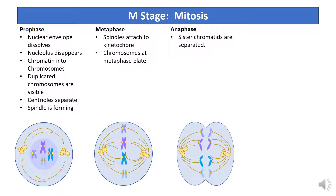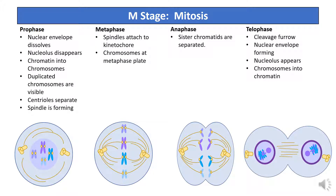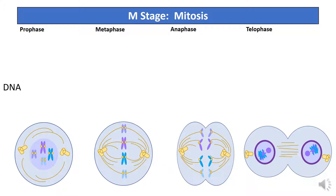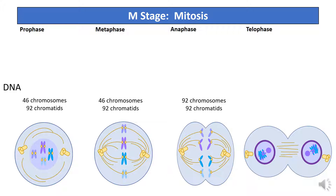Anaphase is the third step, and this is where the chromatids are pulled apart. The fourth step is called telophase, and here we have the appearance of what's called the cleavage furrow, the reformation of the nuclear membrane and the nucleolus, and the complete separation of the chromatids back into the jumbled mess of DNA strands we saw in the beginning. So what about those chromosomes? In prophase and metaphase, we have 46 chromosomes made of 92 chromatids. But in anaphase, we yanked those chromatids apart, and now we have 92 chromosomes made up of 92 chromatids. In telophase, the same thing.